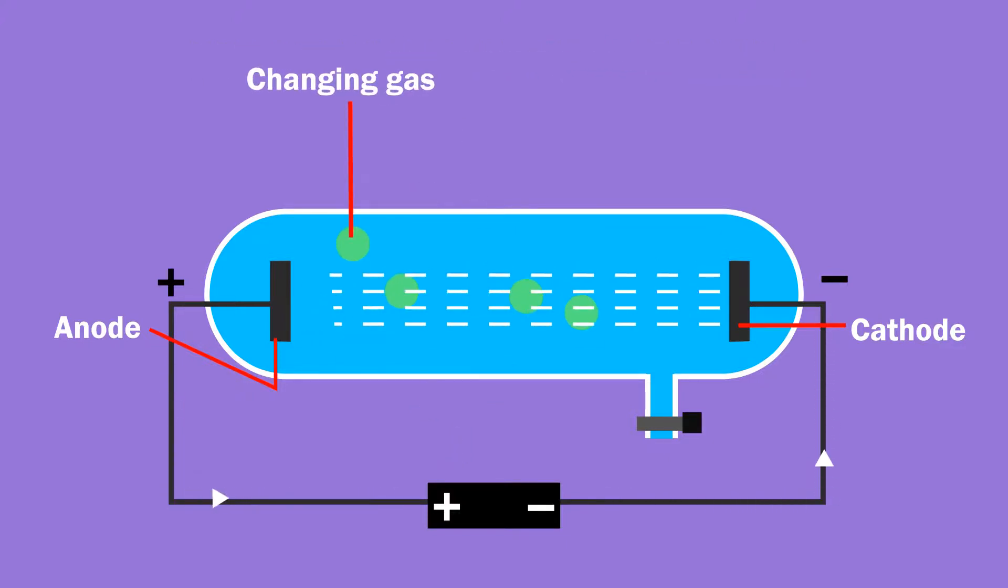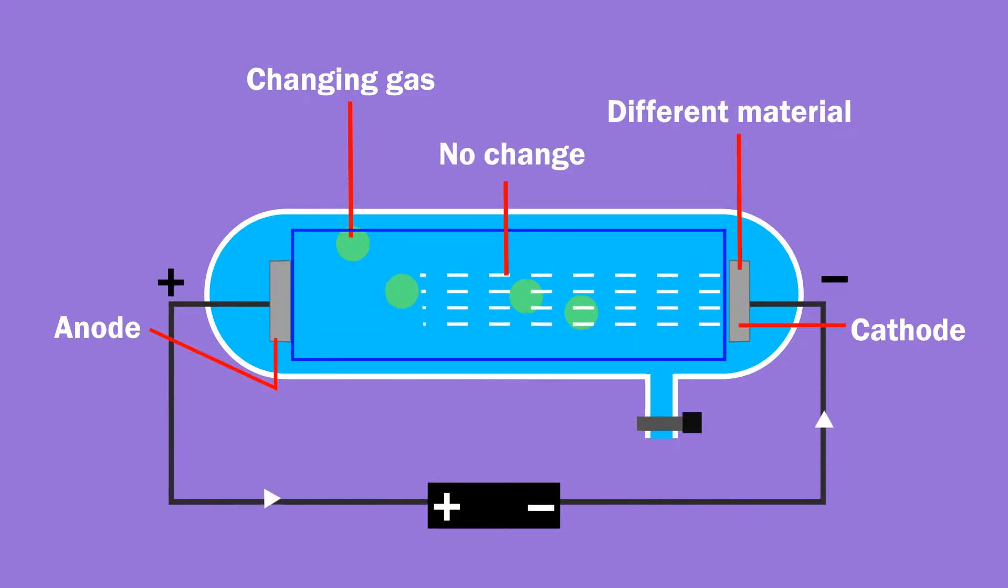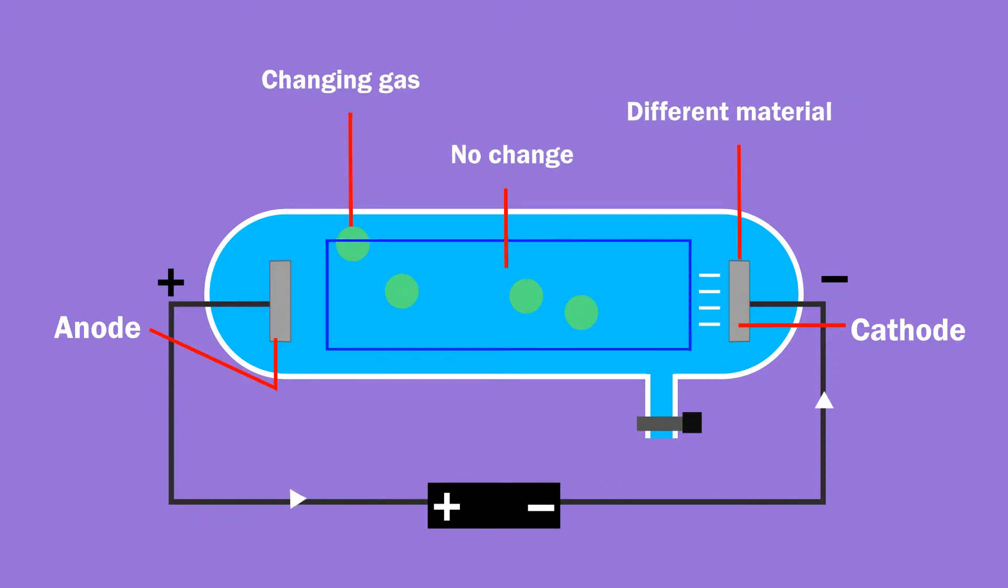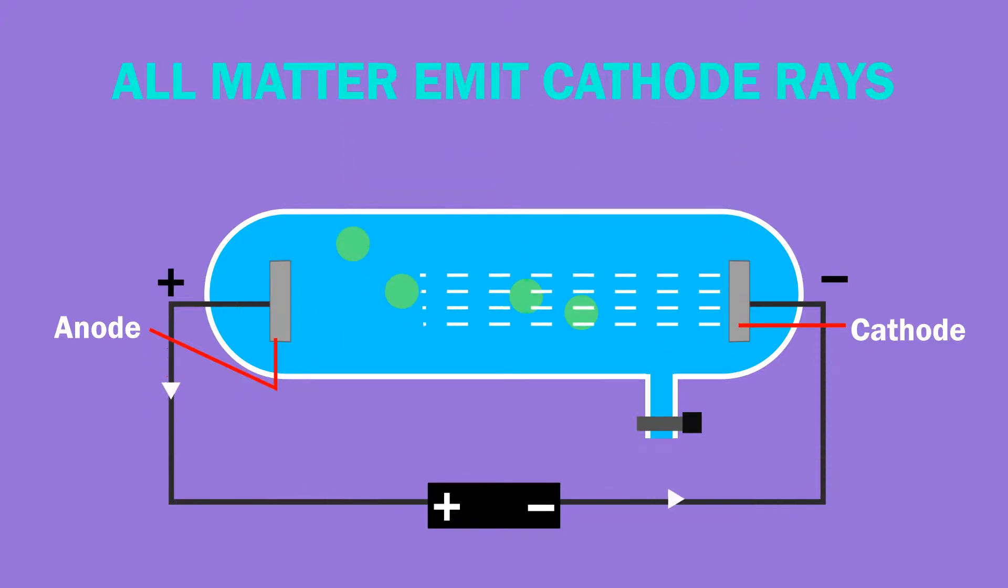Changing the gas in the discharge tube and the material of the cathode terminal did not show any difference in properties of these rays, so we can say that all matter emits cathode rays.